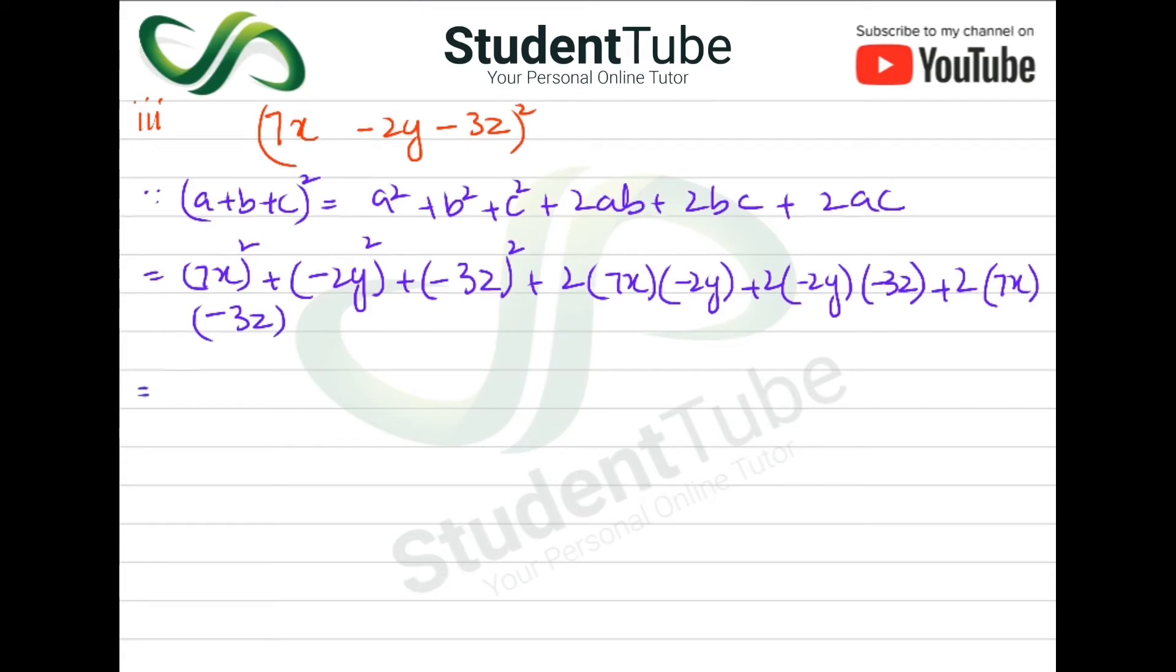Now, 7x squared is 49x square. Plus, minus 2y squared is 4y square. Plus, minus 3z squared is 9z square.